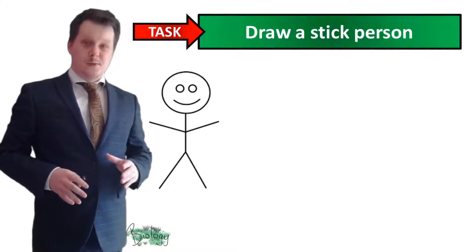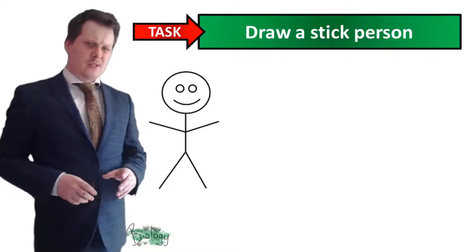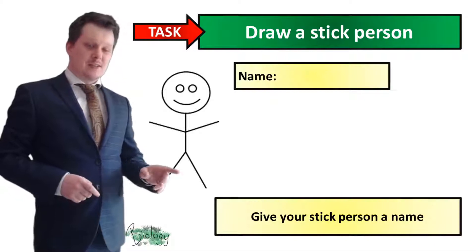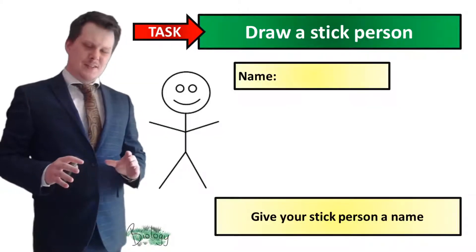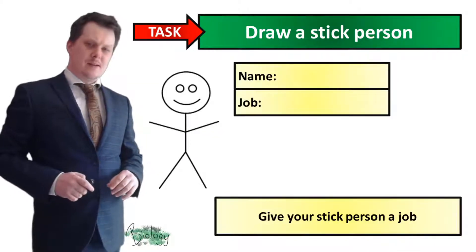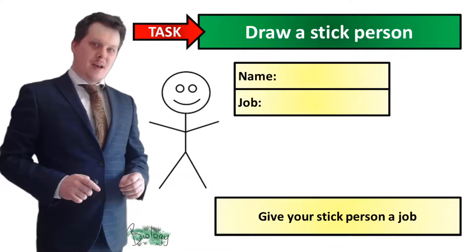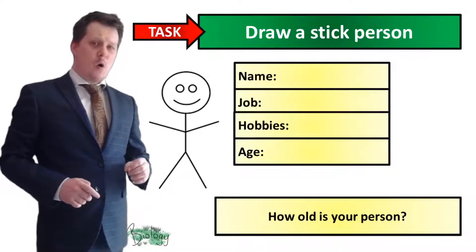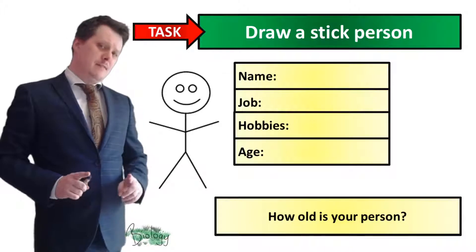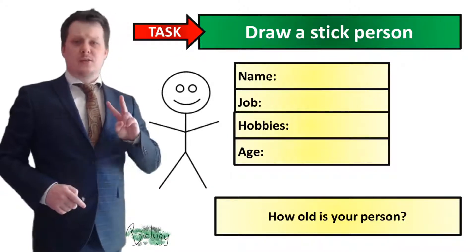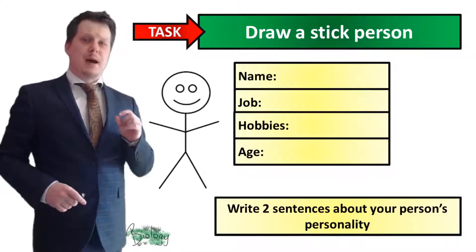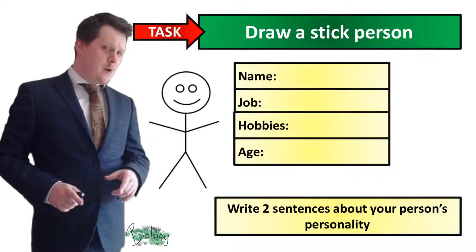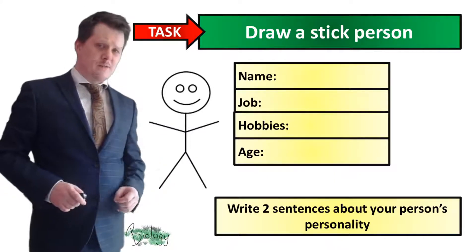In order to explain why people start taking drugs, I'd like you to draw a stick person. Once you've drawn your stick person, give them a name, a job, some hobbies, and note how old they are. After those four things, write two sentences about your person's personality. Pause the video if you need more time.